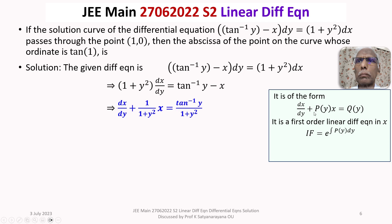In our case, P(y) is 1/(1 plus y squared) and Q(y) is tan inverse y divided by (1 plus y squared). After finding the integrating factor, we write down the general solution, which is x times the integrating factor equals the integral of Q(y) times the integrating factor with respect to y, plus constant c.